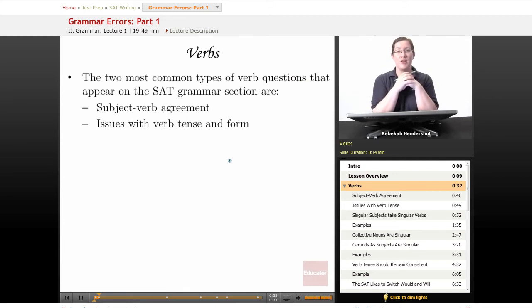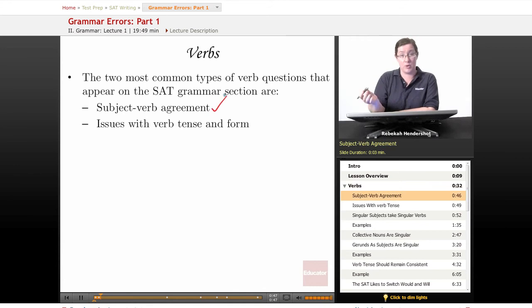To begin with, verbs are one of the big trigger errors for the SAT grammar section. There are a lot of verb errors and they expect you to find a lot of them. The two most common types of verb questions that appear on the SAT grammar section are questions involving subject-verb agreement and issues with verb tense and form.